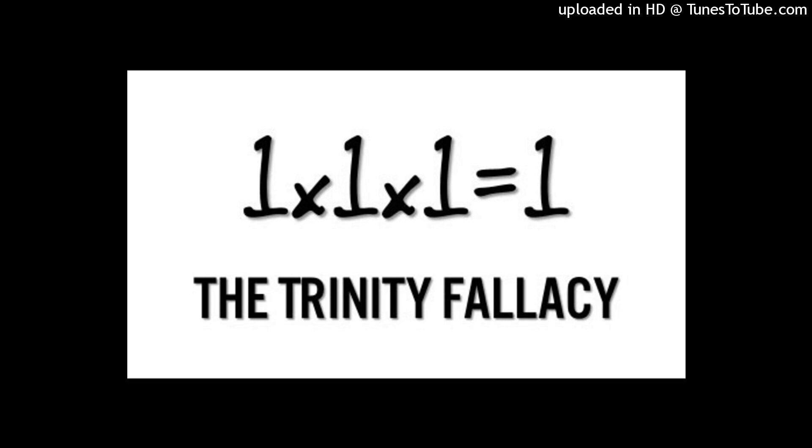The Trinity cannot be reconciled with basic numerical principles, for it tries to combine the concepts of unity and multiplicity in a manner that does not hold mathematically. The very idea of being both less than two and more than two implies a paradox, much like attempting to define a number that is both positive and negative at the same time. Such a number does not exist in the real, logical world of mathematics.